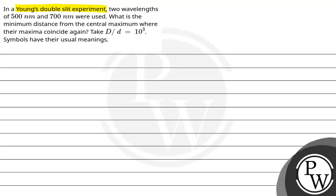In a Young's double slit experiment, two wavelengths of 500 nanometer and 700 nanometer were used.